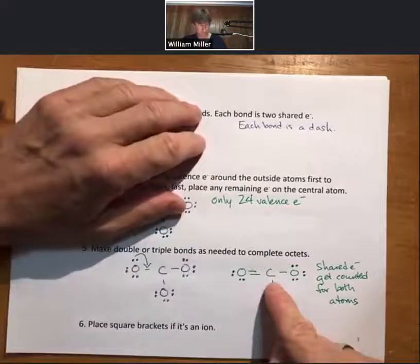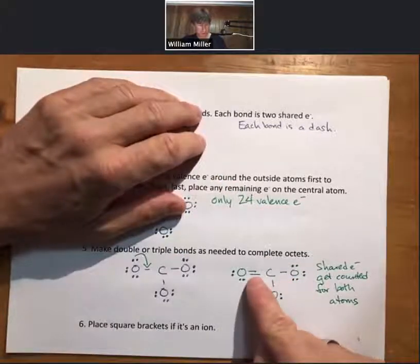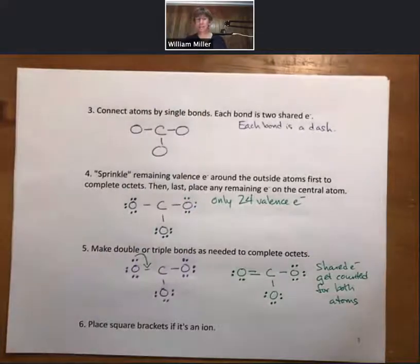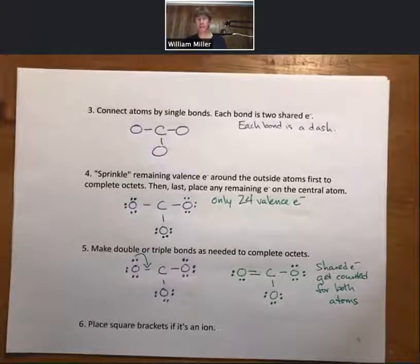And the central carbon, two, four, six, eight there. And so everybody has an octet. That's what you're shooting for with the Lewis structure, and we've arrived there. That's step five.